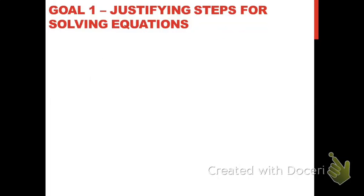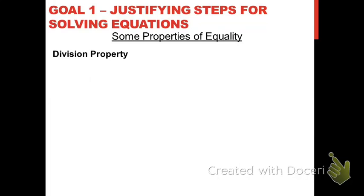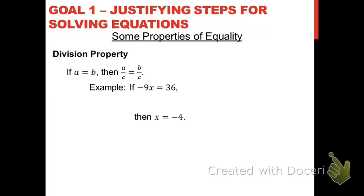And then there's the division property of equality: if you divide both sides of the equation by the same value, you've still got two equal expressions. So if you had negative 9x equals 36 and divided both sides by negative 9, that justifies that x is equal to negative 4.